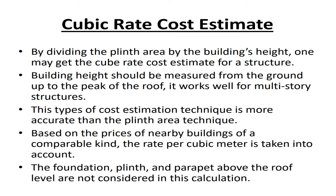Cubic rate cost estimate: By multiplying the plinth area by the building's height, one may get the cube rate cost estimate for a structure. Building height should be measured from the ground up to the peak of the roof. It works well for multi-story structures. This type of cost estimation technique is more accurate than the plinth area technique. Based on the prices of nearby buildings of a comparable kind, the rate per cubic meter is taken into account. The foundation, plinth, and parapet above the roof level are not considered in this calculation.